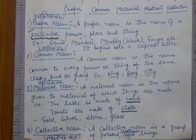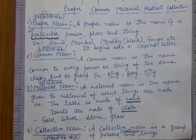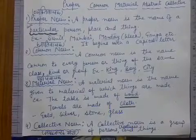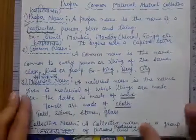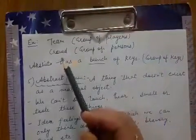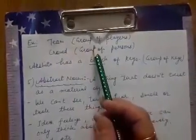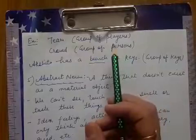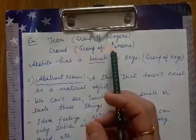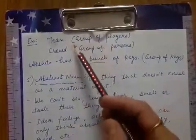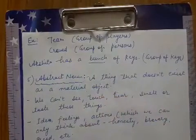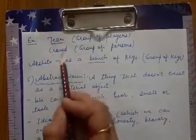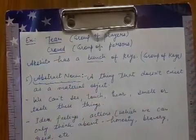Our next noun is collective noun. Collective noun ko aap log Hindi mein bolte hain samuha vachak sangya. Yeh ek group ko refer karta hai — ya toh persons ka group, ya phir creatures ka group, ya phir things ka group. For example, 'team' — team means group of players, yaani jo khiladiyon ka samuha hota hai, use hum team kehte hain. Next is 'crowd' — group of persons ko crowd kaha jaata hai, jahaan par bahut saare log ikatthe ho jaate hain. So team and crowd are collective nouns.